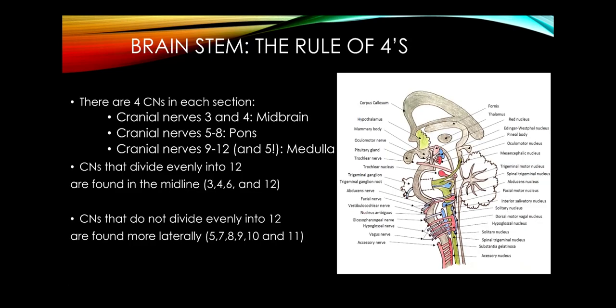Moving up to the brainstem: cranial nerves 3 and 4 are in the midbrain, 5 through 8 in the pons, and 9 through 12 in the medulla. CN5 for pain and temperature is also in the medulla. With any brainstem syndrome, identify which cranial nerve is involved to localize whether it is midbrain, pons, or medulla.